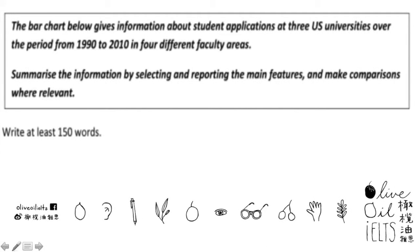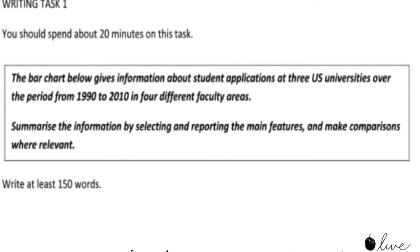And this is an example of what type of questions you may get in IELTS Writing Task 1. The bar chart below gives information about student applications at three U.S. universities over the period from 1990 to 2010 in four different faculty areas. Summarize the information by selecting and reporting the main features and make comparisons where relevant.